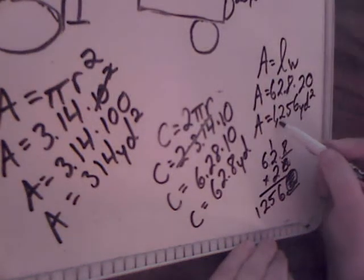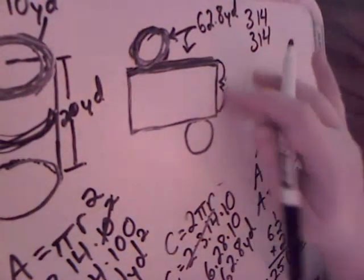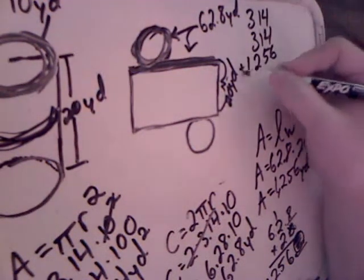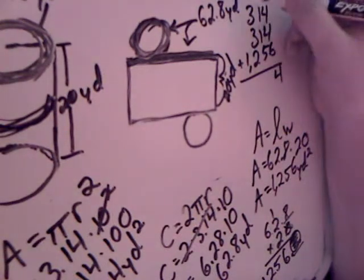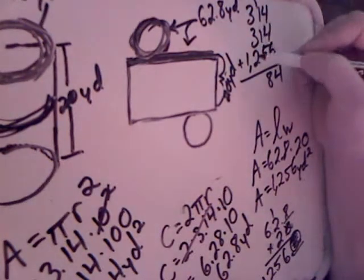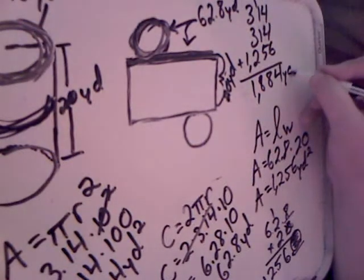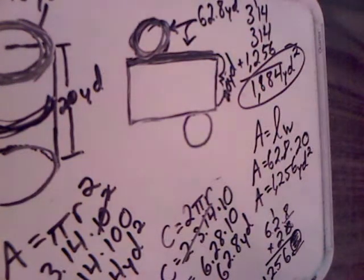All I have to do now is take this 1,256 and add it to our two circles. Adding everything up: 4 plus 4 is 8, plus 6 is 14. 5, 6, 7, 8. 3 plus 3 is 6, 7, 8. My final surface area is 1,884 yards squared. That is the surface area of this figure.